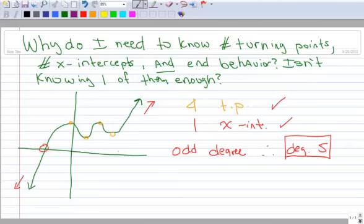Alright, hint. This is what I do. The first thing I do is I look at the end behavior. And in this case, it's negative and positive. So that tells me it's an odd degree.